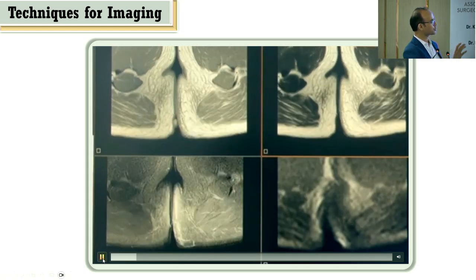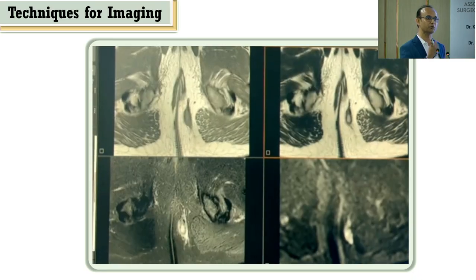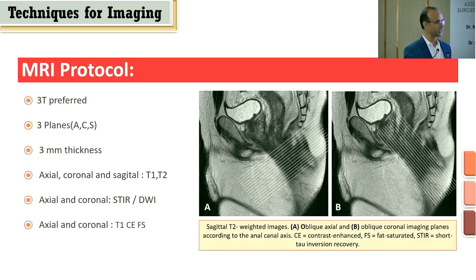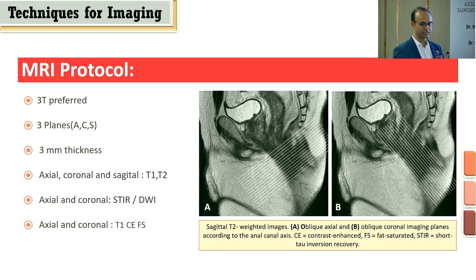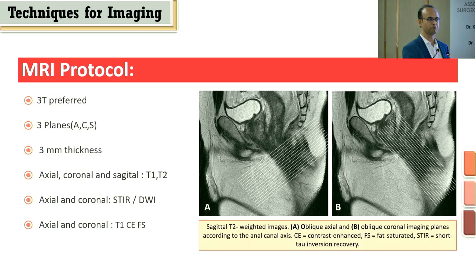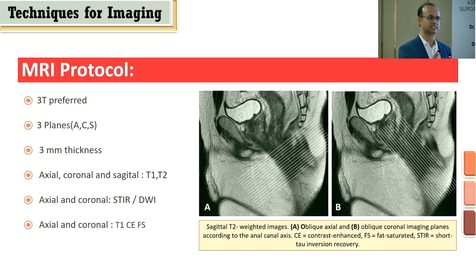The radiologist knows everything from reviewing all sequences together, but the problem is that surgeons don't know what to ask. The simple protocol requires 1.5 to 3 Tesla scanners, three planes (axial, coronal, sagittal), 3mm sections, T1, T2, T1 contrast (fat-suppressed), T2 STIR, and DWI — with axial and coronal T1 contrast images. For a surgeon receiving an MRI report and film, axial fat-suppressed T2 along with coronal images will solve 90-95% of questions.